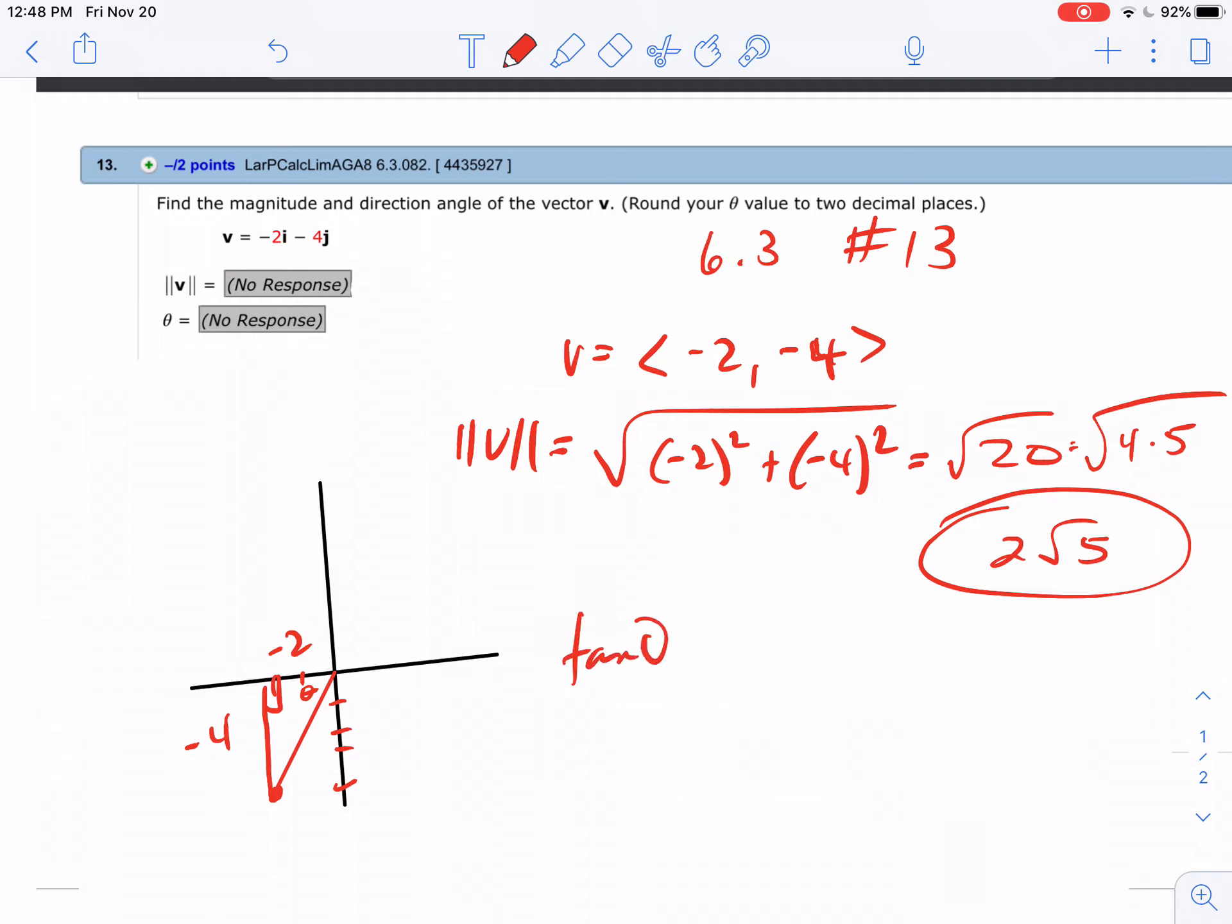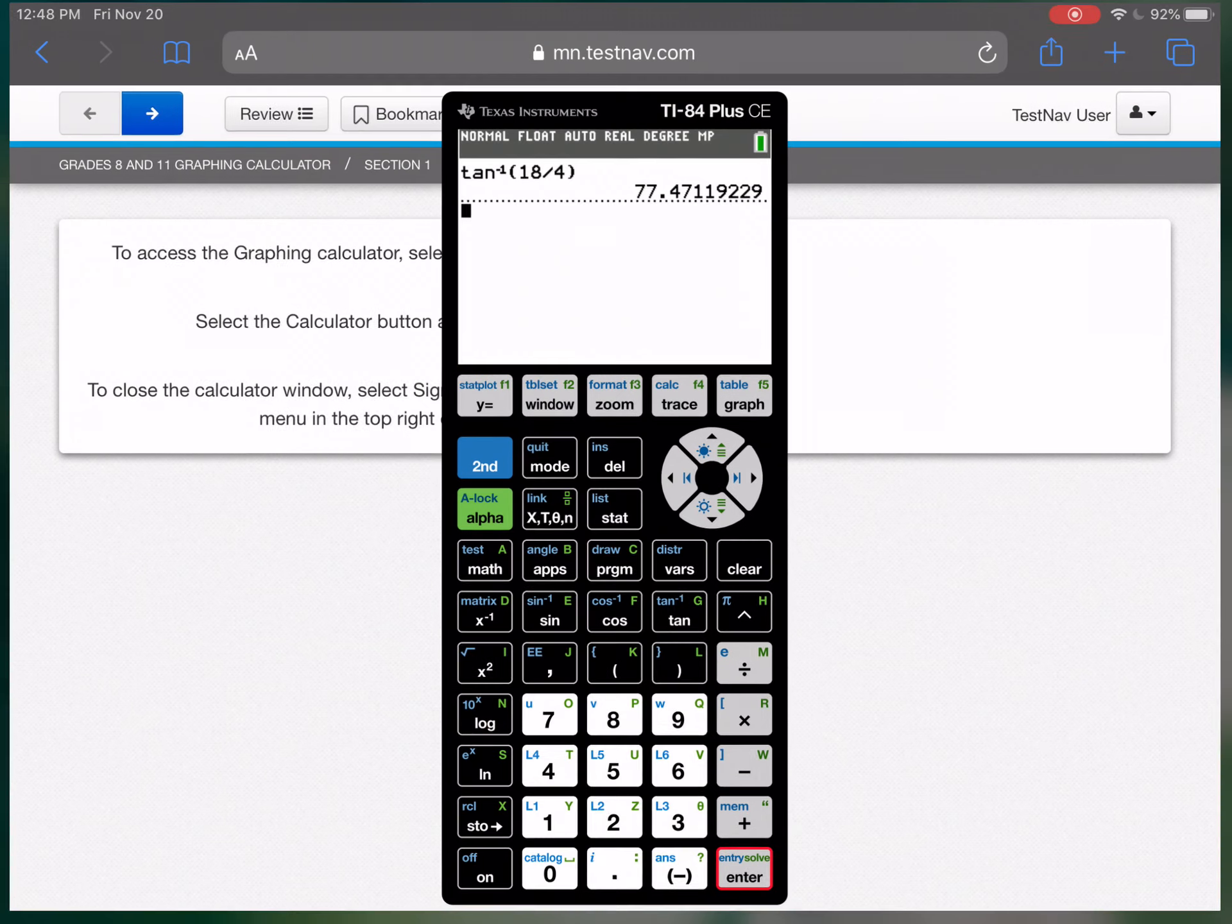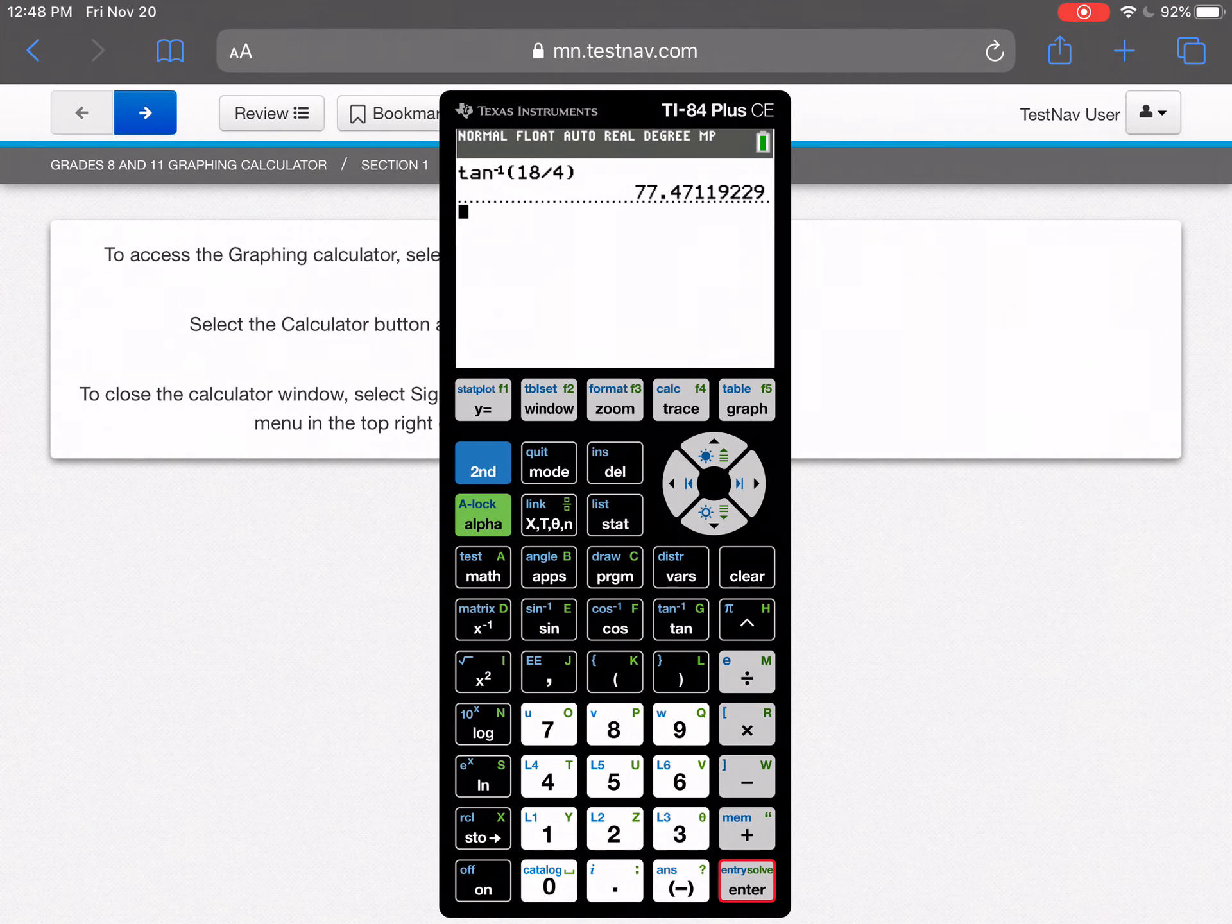So again, tangent of theta is the opposite over the hypotenuse. So we can go to our calculator and do basically the inverse tangent of 4 over 2 or the inverse tangent of 2. And so if I do inverse tangent of 2, I'm getting about 63.43 degrees.